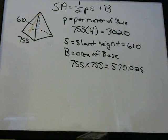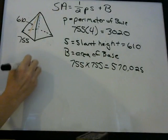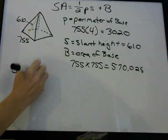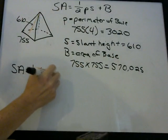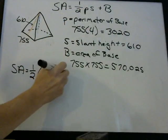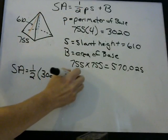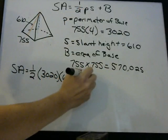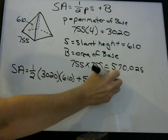So what is the whole surface area? Surface area equals one-half times the perimeter — which is 3,020 — times the slant height of 610, plus the base area of 570,025.